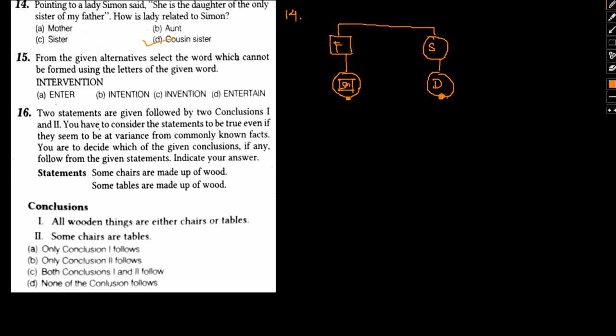Now, let's move to question number 15. From the given alternatives, select the word which cannot be formed from the letters of intervention. We have INTERVENTION: I, N, T, E, R, V, E, N, T, I, O, N. Now, let's check option by option which letters can be formed.